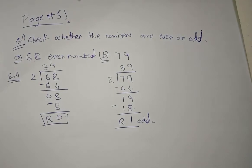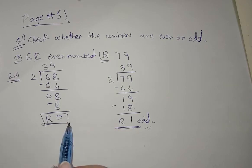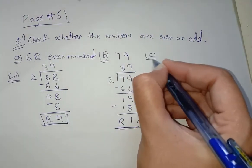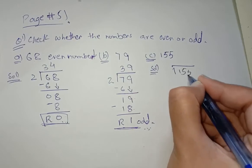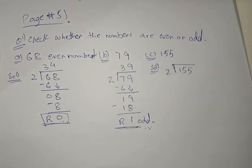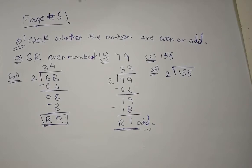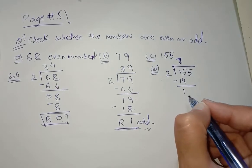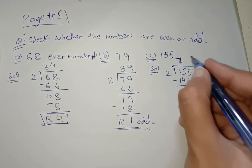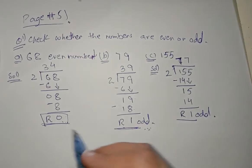If we divide any number by 2 and a remainder remains — even if it is 1, 2, 10, or 100 — then the number is odd. If there is no remainder, the number is even. Part c is 155. We divide it by 2. Two sevens are fourteen — subtract, the answer is 1. Bring down 5. Two sevens are fourteen — the remainder is 1, so 155 is an odd number, because even numbers have no remainder.